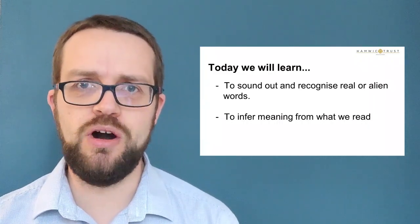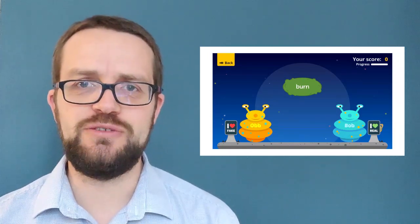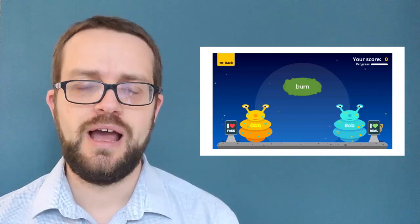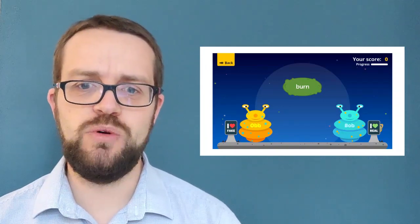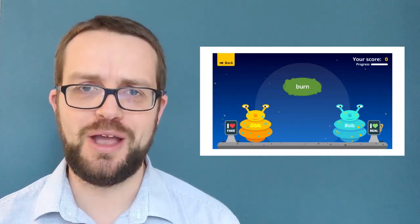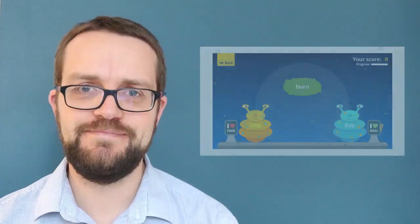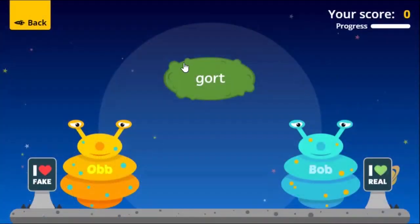So let's start off with your phonics and trying to spot real and alien words. We're going to play a game with Ob and Bob. I'm sure you've used them in your school before. What you have to do is read the word and then if it's a fake word you give it to Ob. If it's a real word you need to give it to Bob and we'll see what happens. Right let's go. Have a look at the word, try and sound it out and then tell me whether you think it needs to go to Ob for a fake word or Bob for a real word.